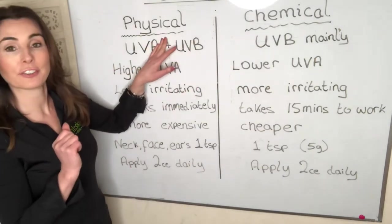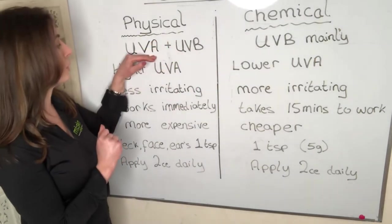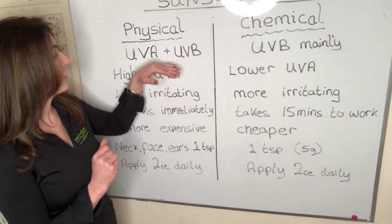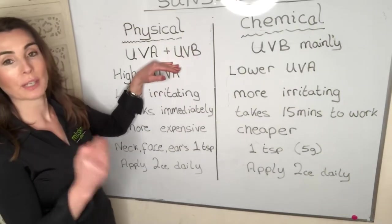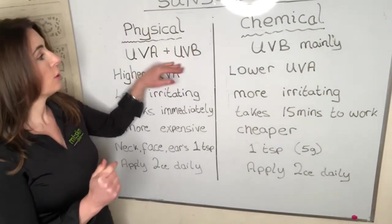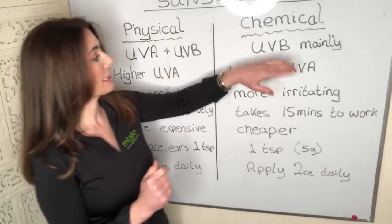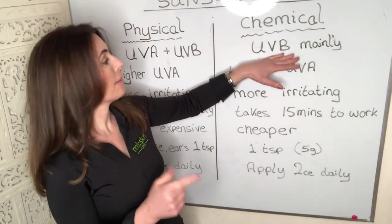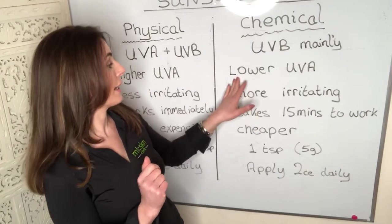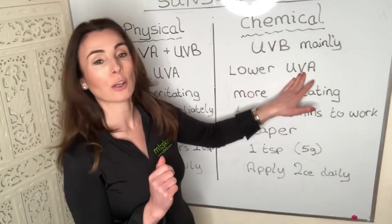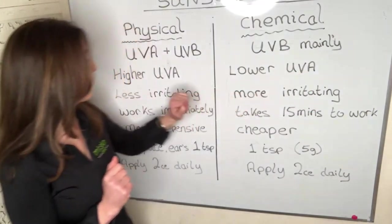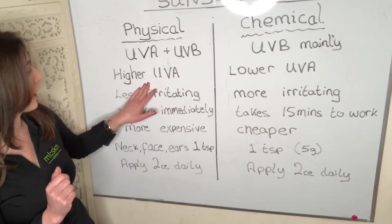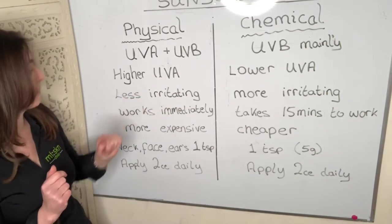The advantage of physical sunscreen is that it gives you both UVA and UVB protection, making it a broad spectrum sunblock. Chemical sunscreens typically only give you UVB protection, and while they may offer some UVA protection, it is generally a lower amount of UVA protection than physical sunscreens provide.